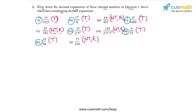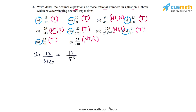To write the terminating decimal expansions of each of these rational numbers, we need a multiplier that will convert the denominator in each case into an exact power of 10. To understand what I mean, let's take the first number which is 13 by 3125.